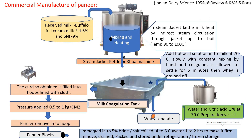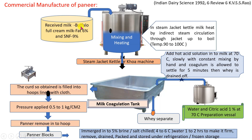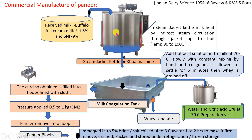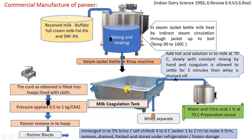Commercial manufacturing process of paneer: the complete flow sheet at industrial level begins with milk preprocessing. Mostly buffalo milk — full cream milk with at least 6% fat and 9% SNF — is used to get good quality final product. It may also be mixed with cow and buffalo milk in 1:1 proportion for very good final texture. After preprocessing, milk is taken into the steam jacketed kettle for continuous heating and boiled for at least 5 to 10 minutes. After boiling, milk is taken into the milk coagulation tank, where the temperature is in the range of 90 to 100 degrees Celsius.